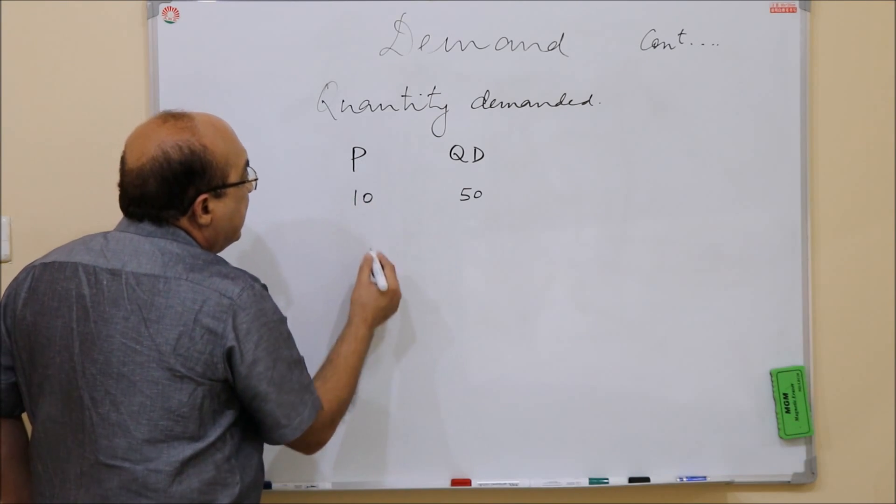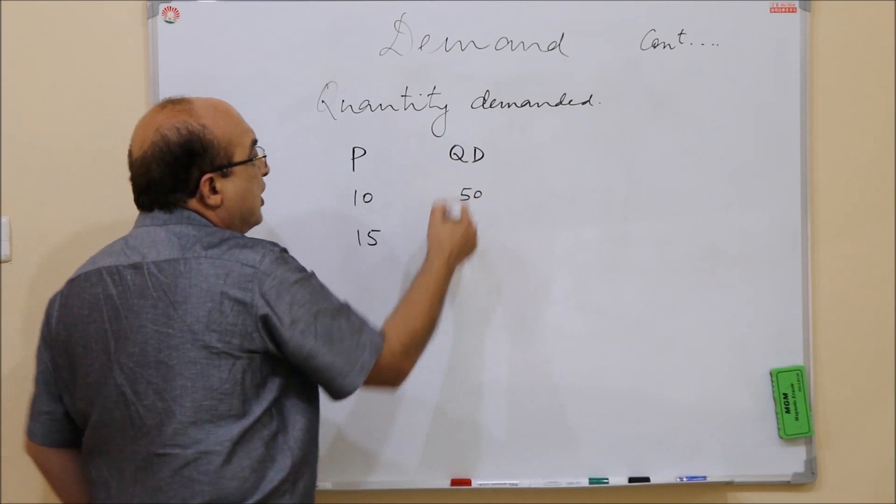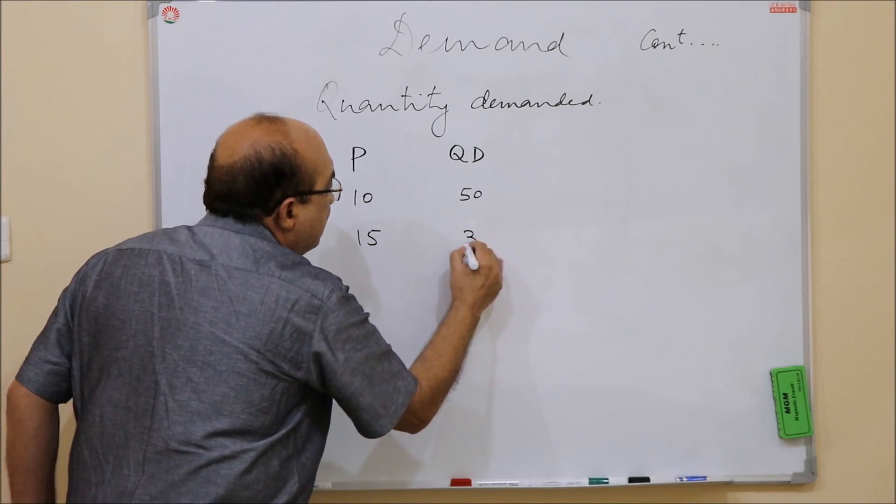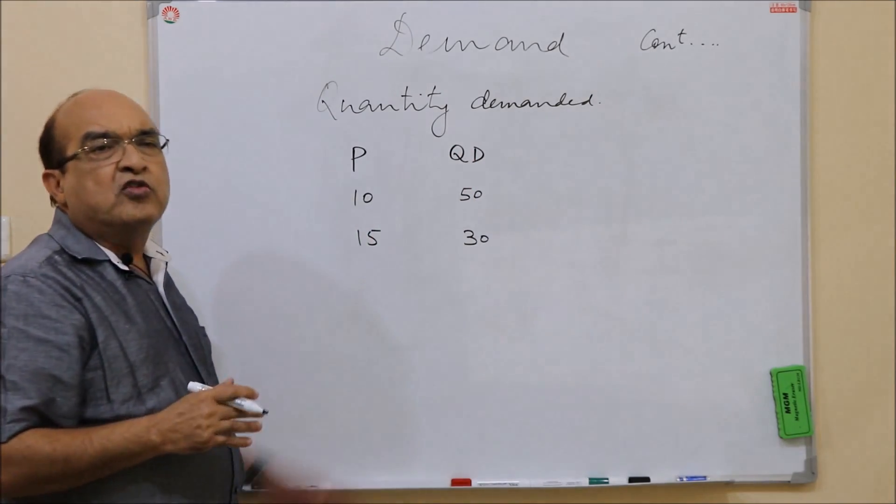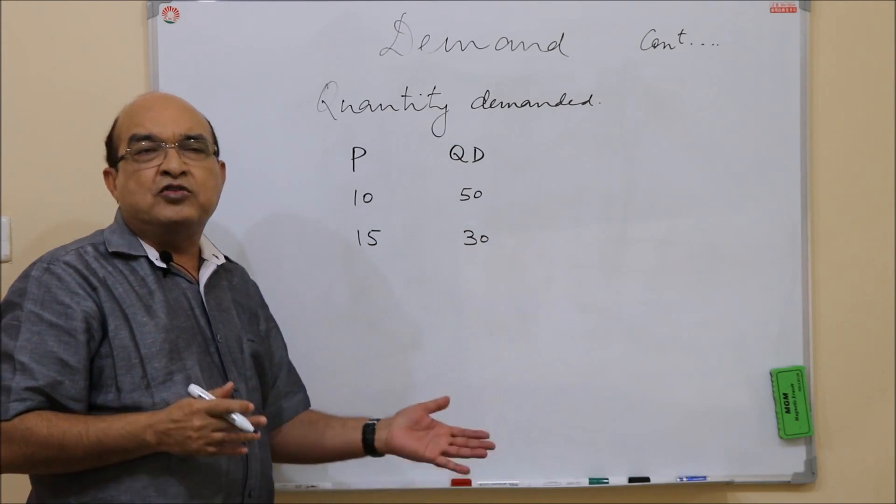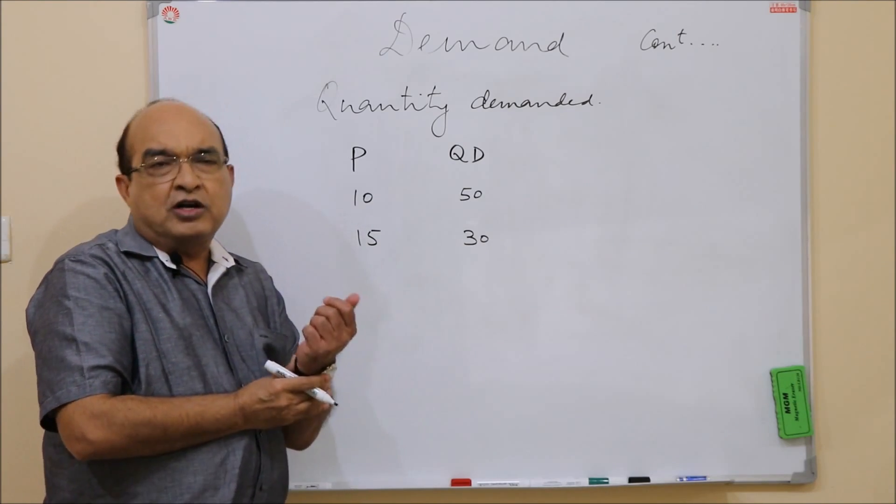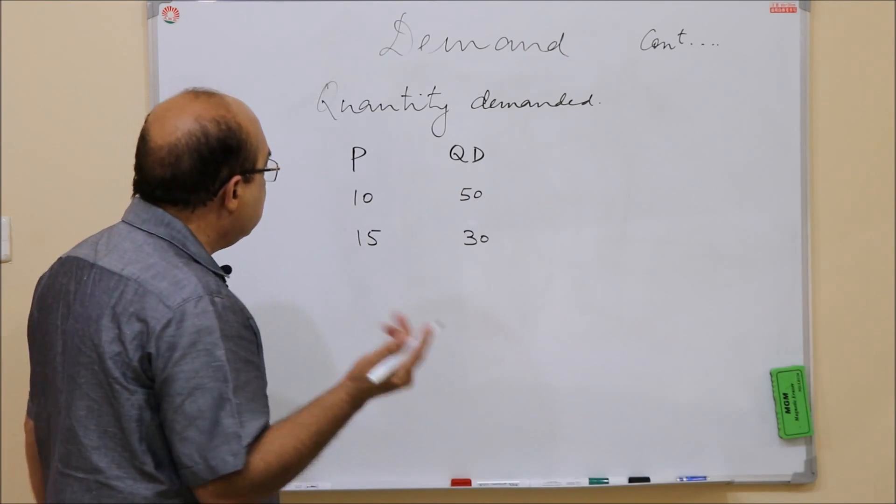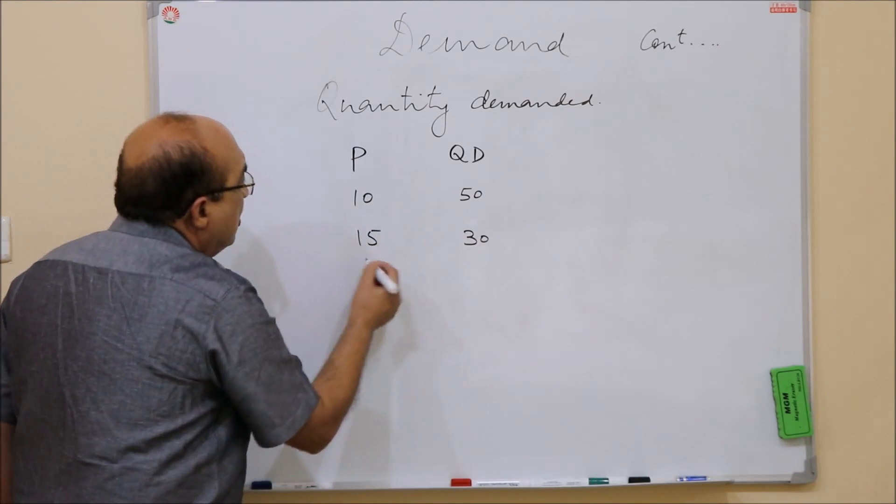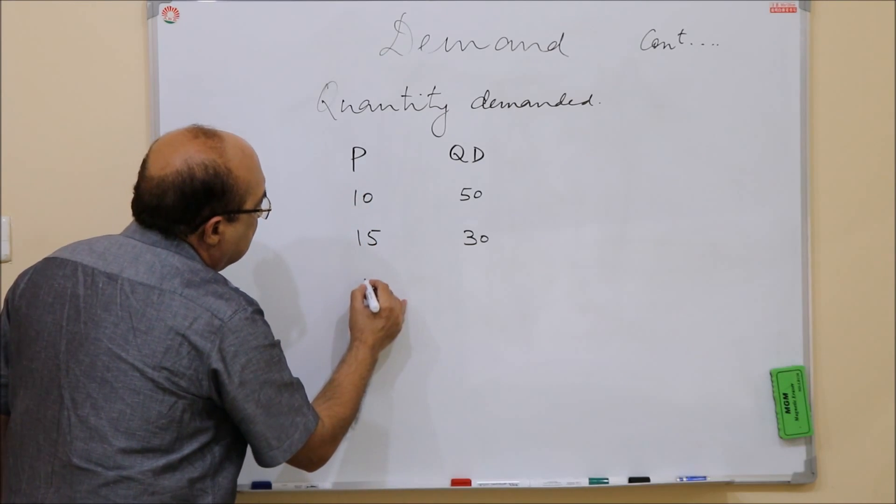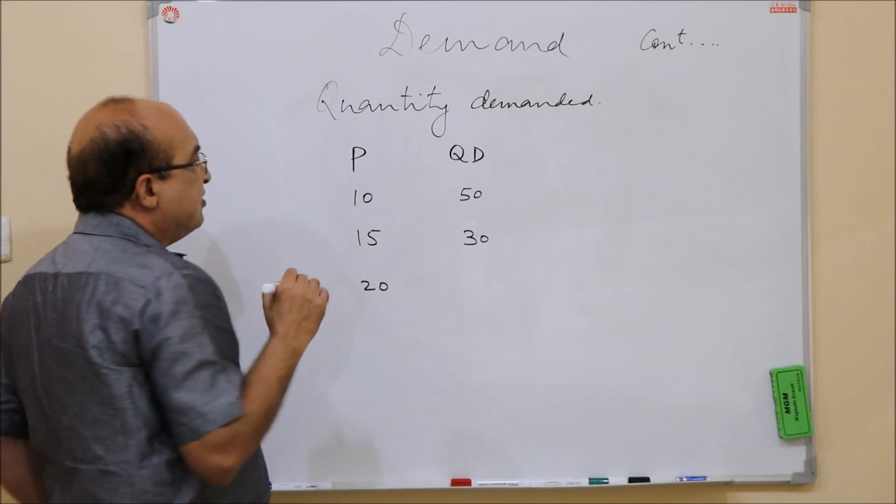When the price increases from 10 to 15, quantity demanded will come down to 30, suppose. Why this quantity demanded will come down we will discuss later in the law of demand and the reason for this kind of relationship. Now let us make another entry - that is 20.